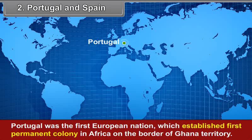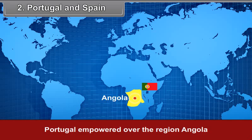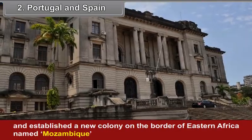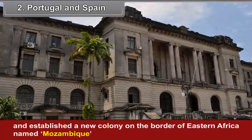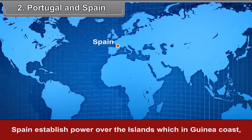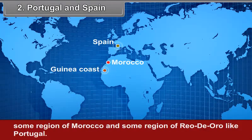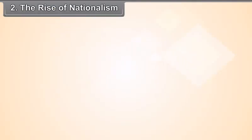Second, Portugal and Spain. Portugal was the first European nation which established the first permanent colony in Africa on the border of Ghana territory. Portugal also gained power over the region of Angola and established a new colony on the border of Eastern Africa named Mozambique. Spain established power over the islands in the Guinea coast, some region of Morocco and some region of Rio de Oro, similar to Portugal.